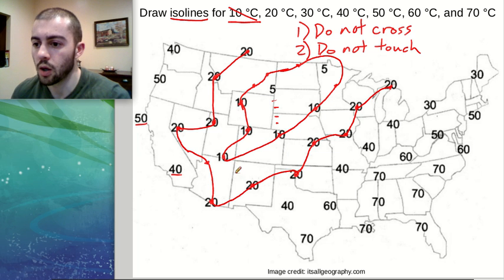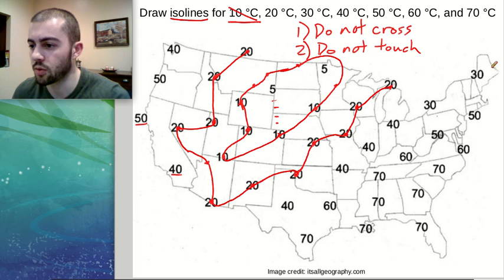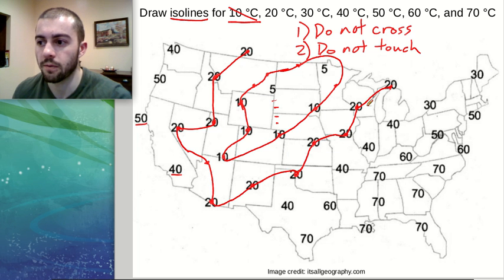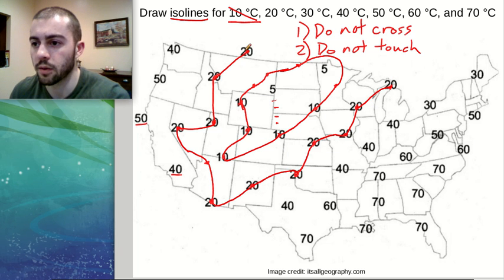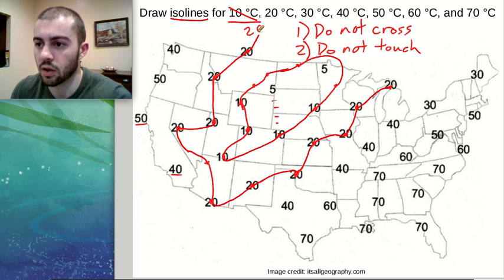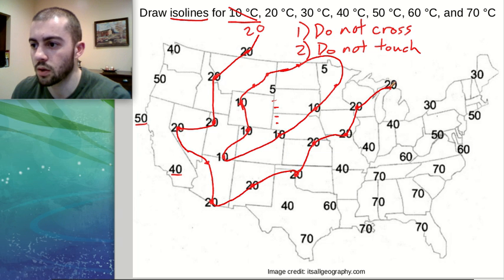We've connected all of our 20-degree marks, only going through areas that were safe. You saw us basically snaking this line through little gateways made between two numbers. To finish this line, the best thing to do is continue it off the edge of the map and label it with its value — in this case, 20 degrees.